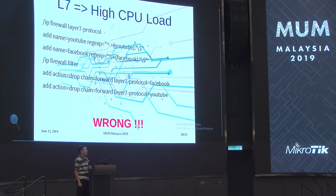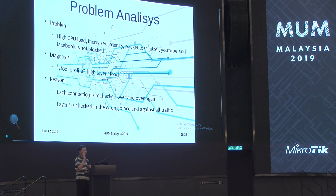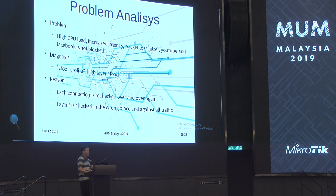Next: who uses this? We found many people using Layer 7 protocol to block YouTube, to block Facebook — maybe 80% still use this. They define the protocol in the firewall and block it with Layer 7. That is a wrong configuration. The problems: high CPU load, increased latency, packet loss, jitter — and YouTube and Facebook will not actually be blocked. Diagnosis tool shows high CPU load on Layer 7. The reason: each connection is rechecked over and over again, and Layer 7 is checked in the wrong place against all traffic.